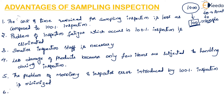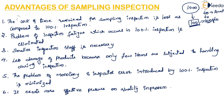The next and most important advantage of sampling inspection is that it exerts more effective pressure on quality improvement. Since the rejection of the entire lot on the basis of sampling brings stronger pressure on quality improvement than the rejection of individual articles — if even a few samples are defective, the full lot is rejected — this sampling approach strongly stresses quality improvement.